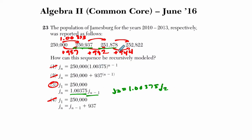In other words, if I want to know what this term is, I multiply the previous term by 1.00375 and so on and so forth.